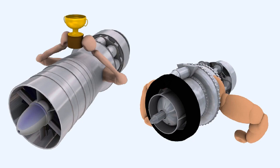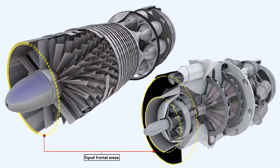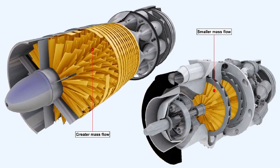The centrifugal compressor does however have one or two disadvantages which have relegated it to second position with regards to its use in large modern engines. Firstly, if we compare two compressors — one centrifugal and the other axial — each having the same frontal cross-sectional area, we would find that the axial flow compressor can take in a far greater mass of air than the centrifugal compressor.